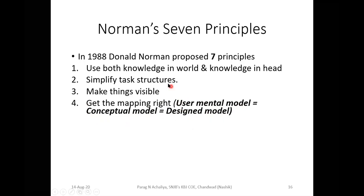In Human-Computer Interaction, these three parameters play a very important role: user mental model, conceptual model, and design model — they should all align. That is what 'get the mappings right' means. This is the fourth principle Norman states in his seven principles.